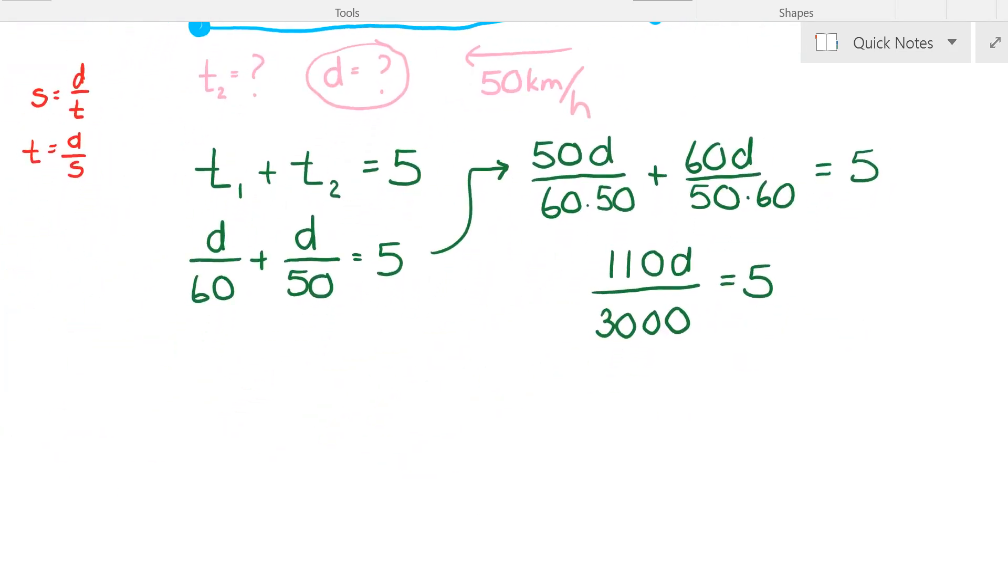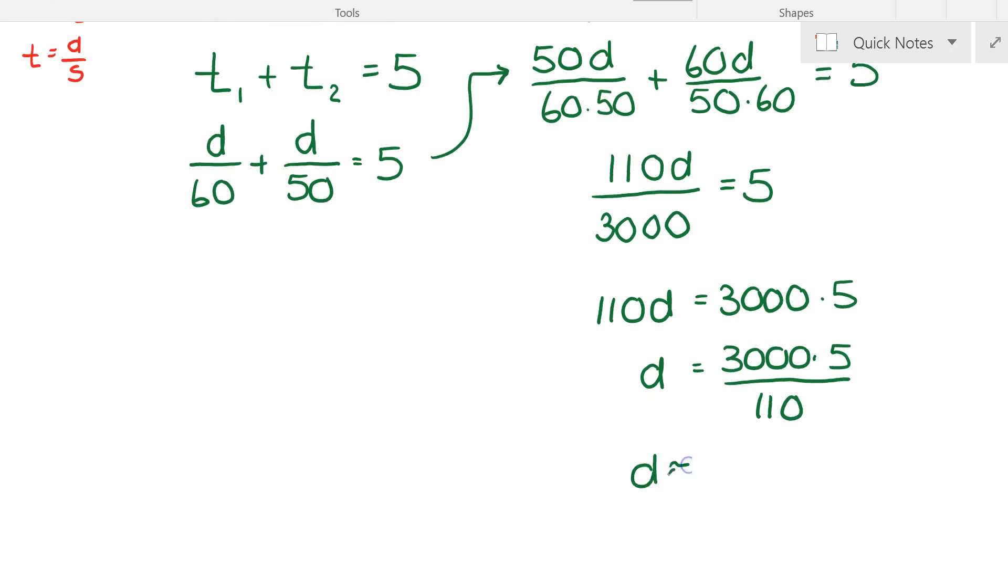Let's just come down here. We're going to say 110d is equal to 3000 times 5. So d is equal to 3000 times 5 over 110. So d is approximately equal to, now I'm going to get my calculator out, and I get this approximately equal to 136.36 kilometers. And that's it.